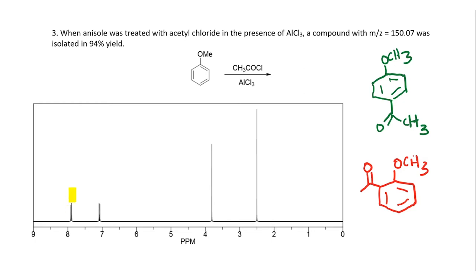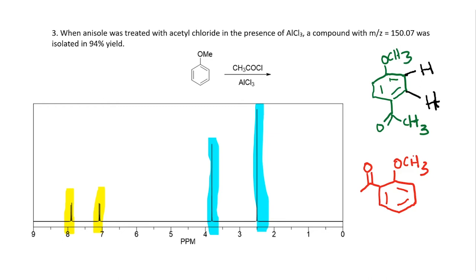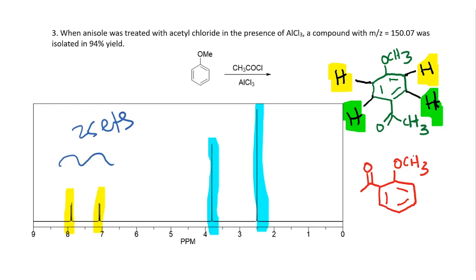Looking at this NMR spectrum, we have two peaks in the aromatic region and all other peaks are in the aliphatic region. We are mainly interested in the peaks in the aromatic region; keep in mind that the yield of the compound is 94%. Looking at the product that can be formed, the product has this hydrogen here and this hydrogen here — basically two sets of hydrogens, because these two hydrogens are identical and these two are the same by symmetry. Therefore, you would see two sets of signals, which is what you see in this NMR spectrum.